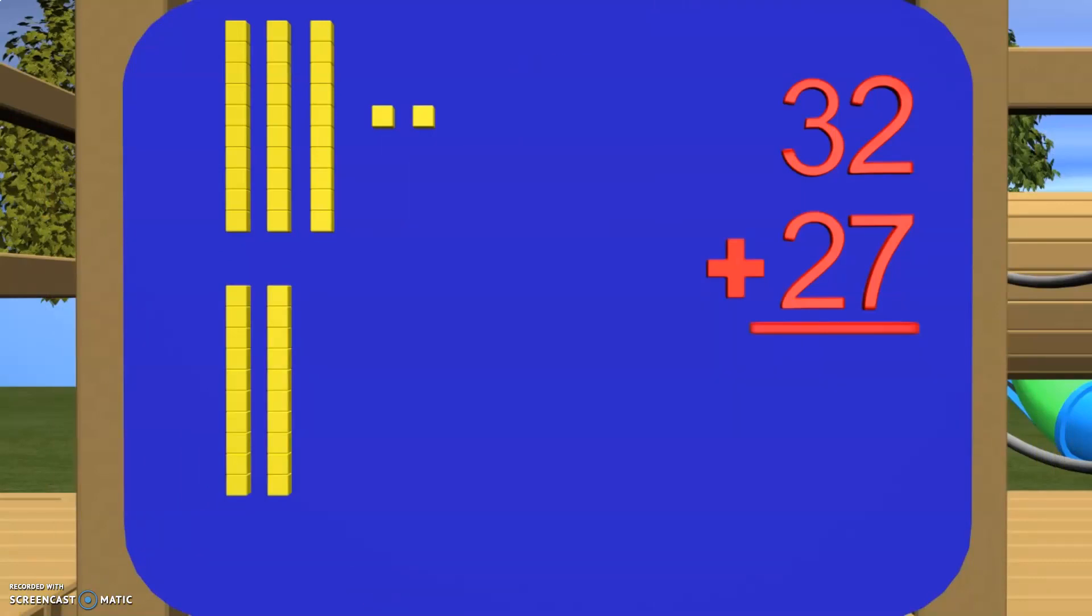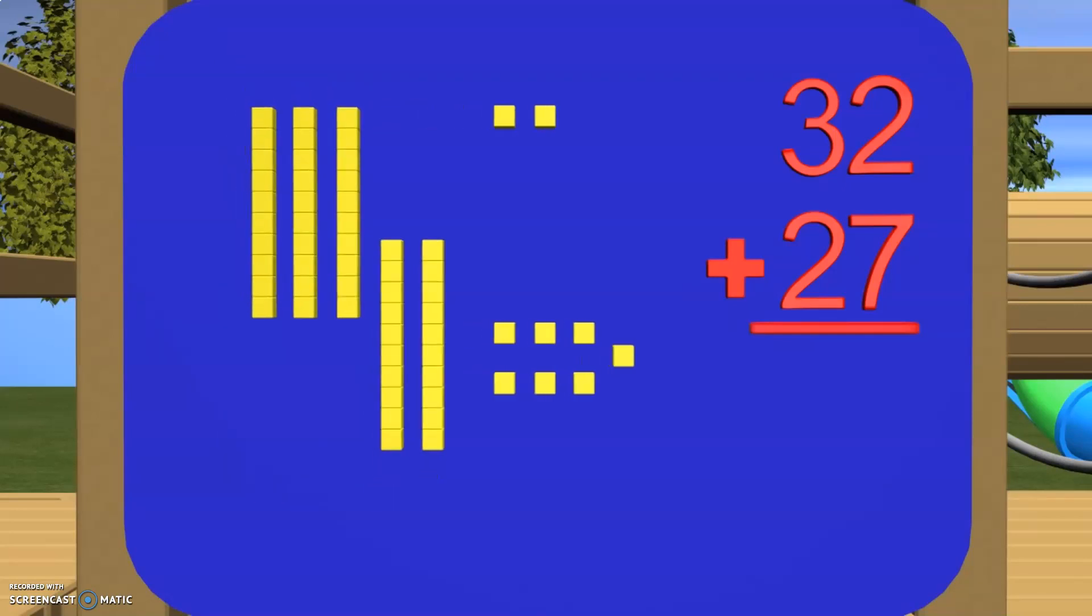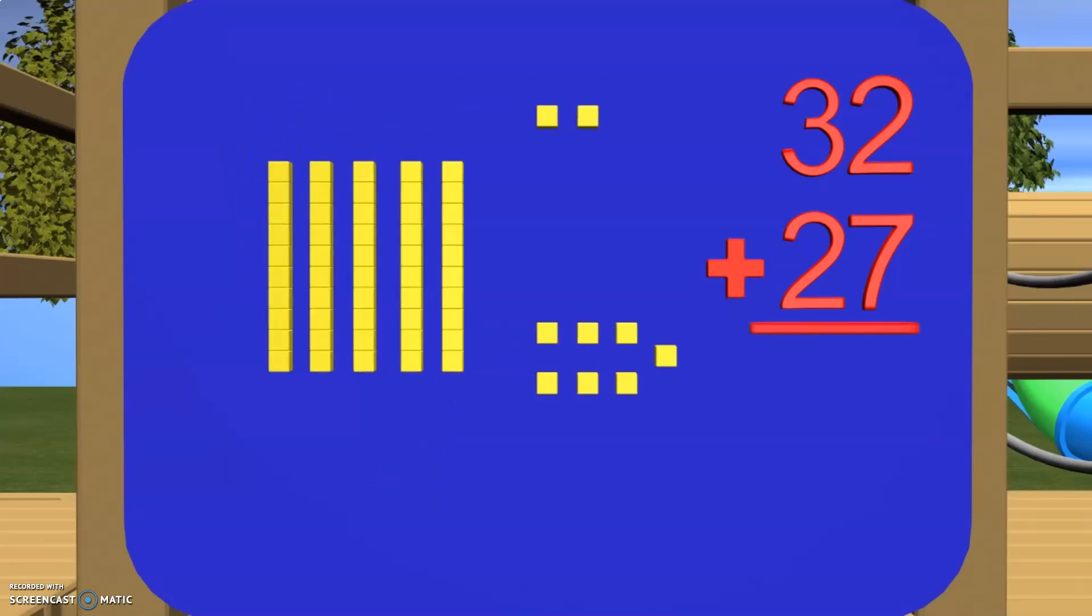Now in the ones place, I need 7 of the ones blocks so I get 1, 2, 3, 4, 5, 6, 7. We can now add these two groups together but to do this, we need to be careful and stay within our place value. This means that we should not add the tens blocks with the ones blocks. So we are going to join all our tens place together and then we will join all of our ones place together.